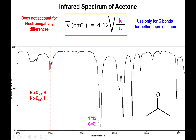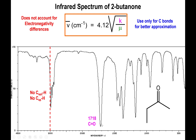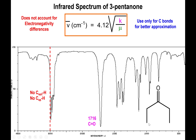Keep an eye on this number: 1715. If I change that to a derivative — now this is 2-butanone, just another ketone — we'll have a value of 1718 for that strong carbonyl peak. Once more, no real peaks above 3000; everything is slightly below 3000, representing the alkane C-H bonds. Changing this to 3-pentanone, just another ketone, we are still around 1715 to 1718 wave numbers for the carbonyl carbon.